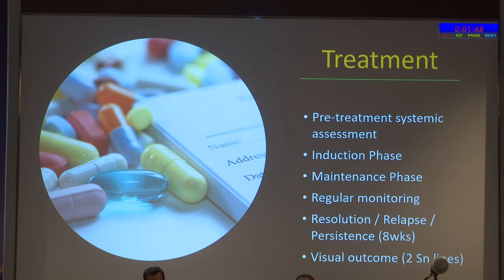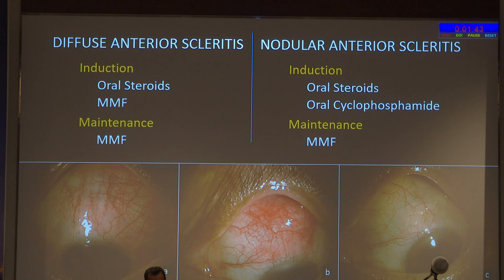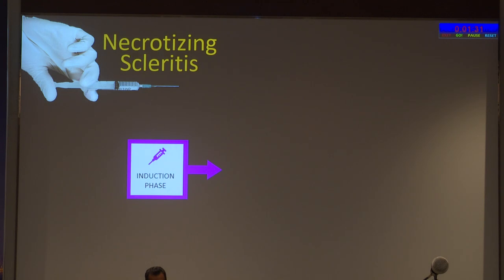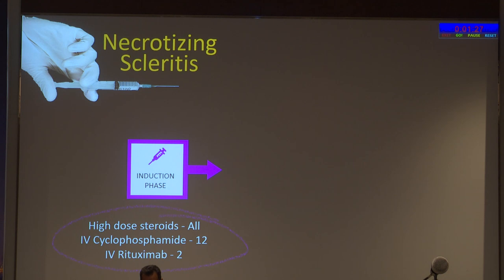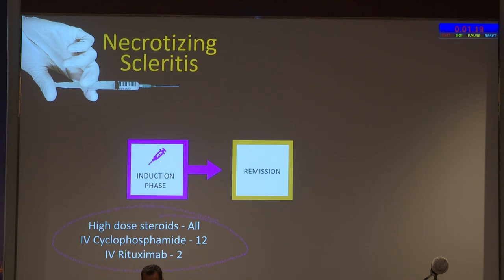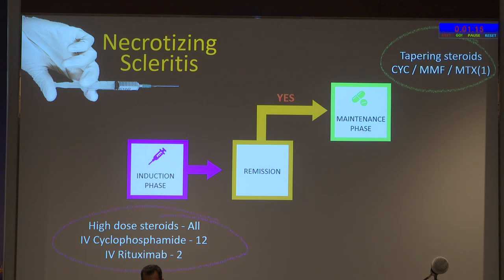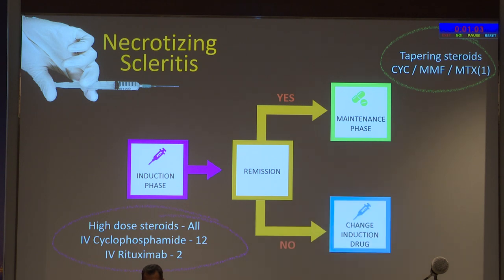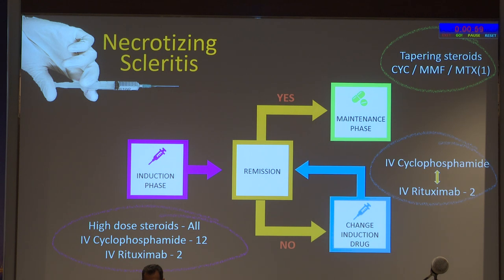All patients were ANCA-positive. Only six patients had systemic GPA; the majority, 88%, had C-ANCA positivity, with 5-20% P-ANCA or negative — consistent with literature. No difference was found between C-ANCA and P-ANCA groups. Treatment: diffuse anterior scleritis was induced with steroids and MMF and maintained with MMF; nodular was induced with oral steroids and cyclophosphamide and maintained with MMF; necrotizing scleritis received high-dose steroids in induction, 12 of 14 received cyclophosphamide, and two renal patients received rituximab.